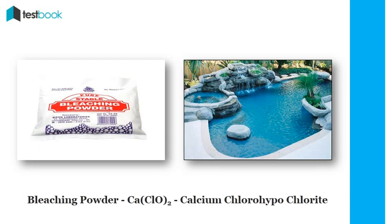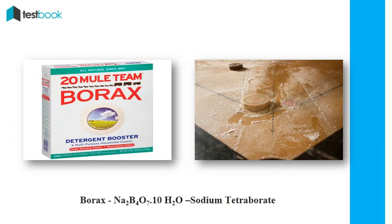Calcium hypochlorite, or bleaching powder, is a mixture of lime and calcium chloride, which is commonly used to sanitize swimming pools or as a disinfectant in drinking water.